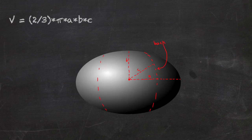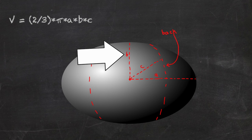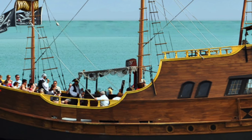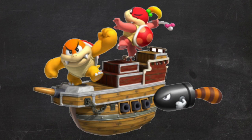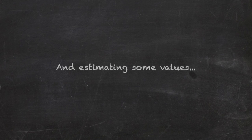The volume of a hemellipsoid is two-thirds pi ABC, where A is radius 1, B is radius 2, and C is radius 3. Taking real-life measurements of pirate ships, measuring various things in-game and estimating some values,